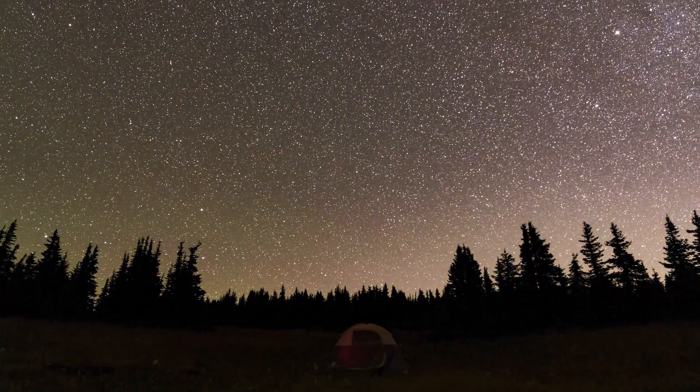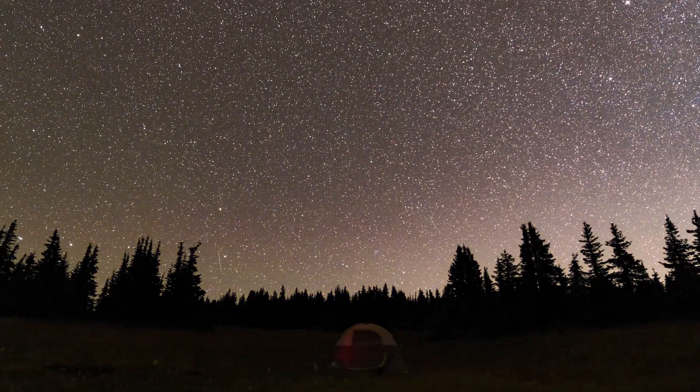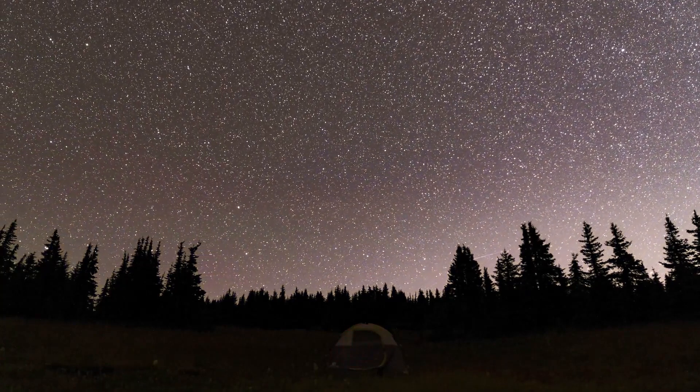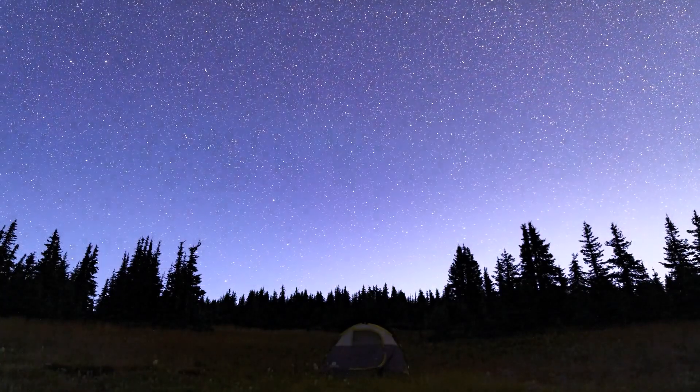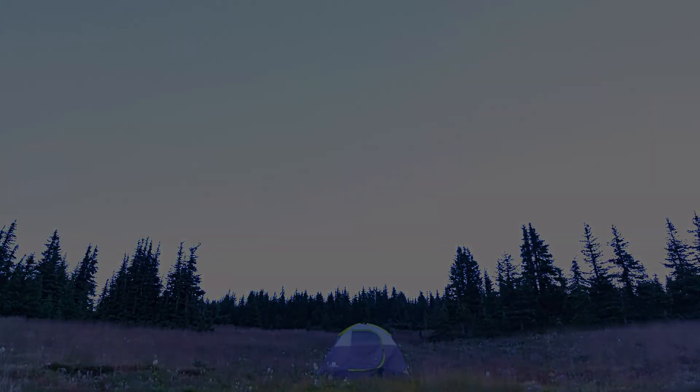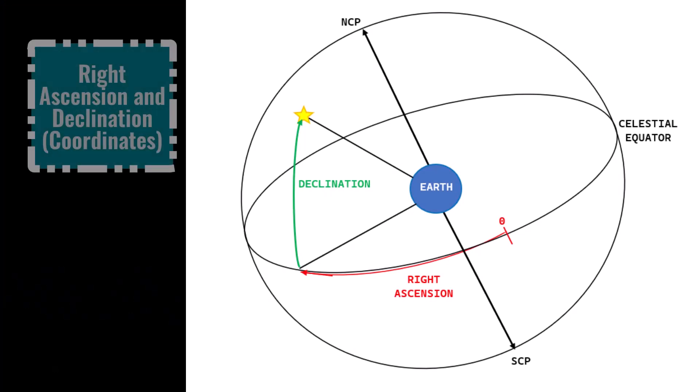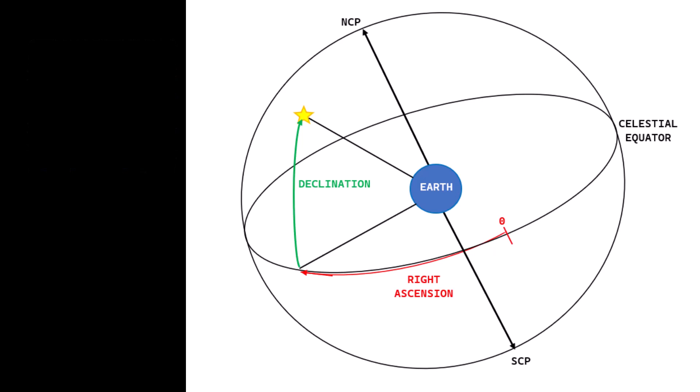So in reality if you wanted to tell someone where to look using this system you'd have to not just tell them the altitude and azimuth, you'd also have to let them know what location and exactly what time to look which is irritating. Luckily next up we have right ascension and declination which is another way of specifying where objects are on the sky and are independent of time and location on earth.